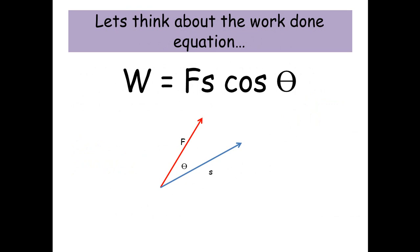So firstly we need to think about the equation for work done. Work done equals force times the displacement times by the cos of the angle between the two vectors of force and displacement. And this is key, the cos theta part is key to how this actually works.